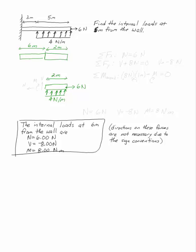I'm at this point going to put on my internal loads following the sign conventions. So I have V, M, and N. These are the sign conventions for the right-hand piece of the beam.